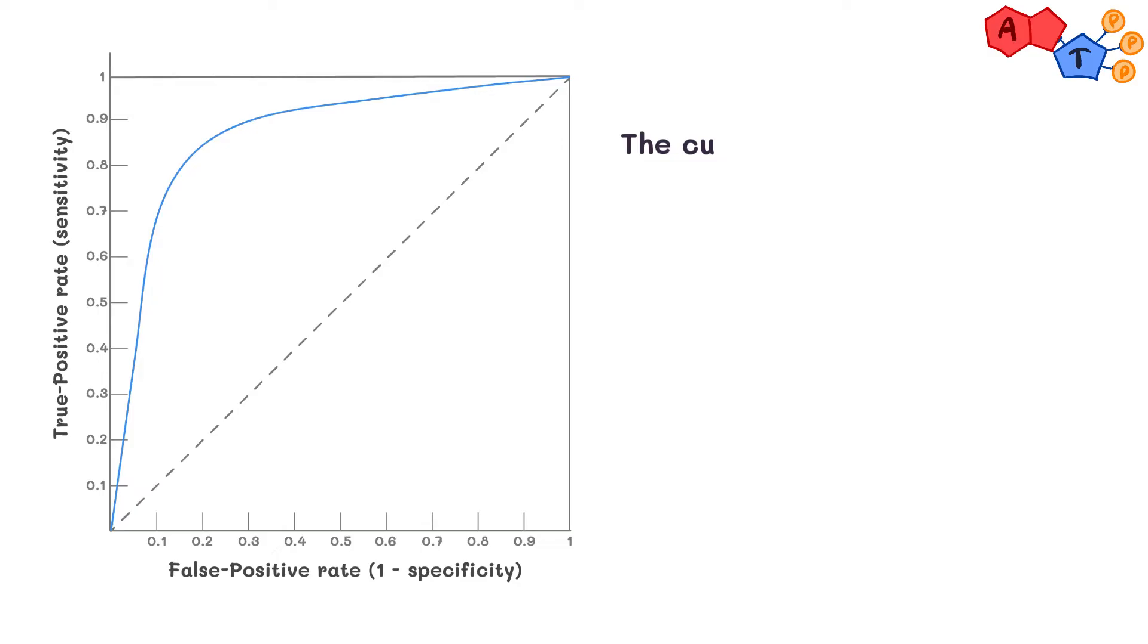The curve is defined by its specificity, sensitivity, and associated cutoffs. In other words, how well it can identify those with the disease compared to those without a disease based on different cutoffs is what determines the ultimate shape of the curve.